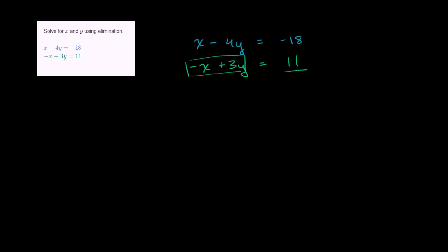So if we add this to the left-hand side, we could add the same thing to the right-hand side. But instead, we're just going to add the 11, because it's the exact same thing as negative x plus 3y. So we're going to add 11 to the right-hand side.